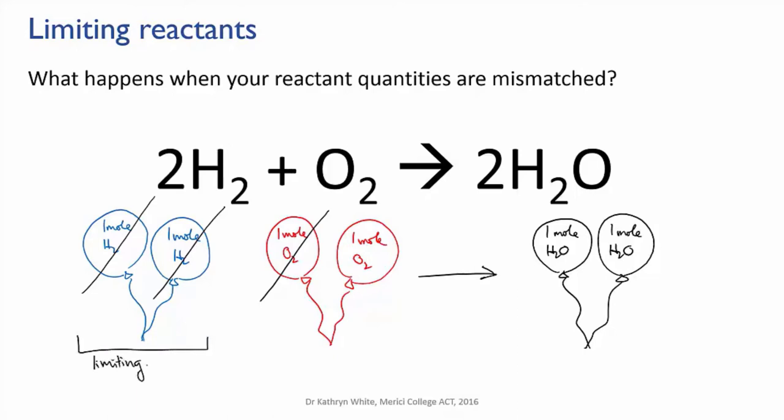Here, the hydrogen is the limiting reactant because it was the one that ran out and determined when the reaction stopped. The oxygen was the excess reactant because we had more than was needed to exactly react with the limiting reactant.